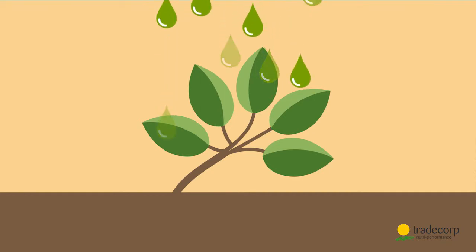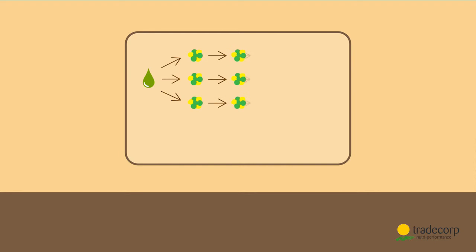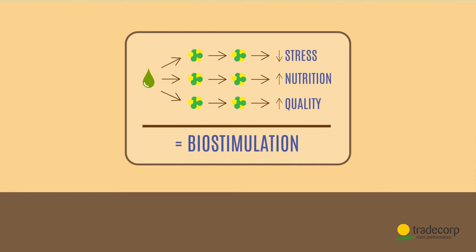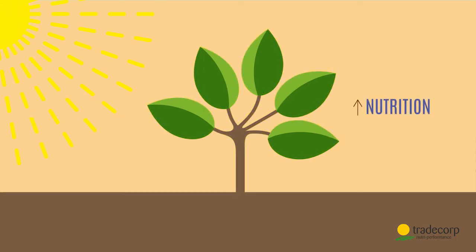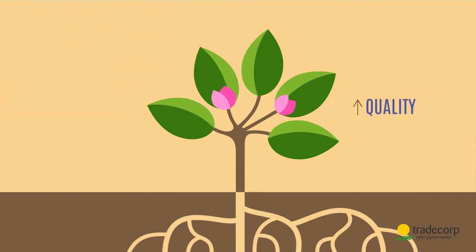Once sprayed, Filgreen penetrates into the plant and causes a chain reaction that bio-stimulates it. Stress in the plant is reduced, nutrient uptake and photosynthesis become more efficient, and growth, roots, and flowers are stimulated.